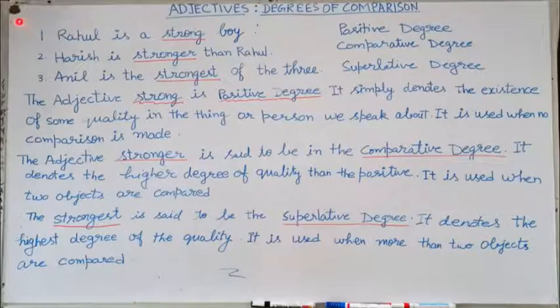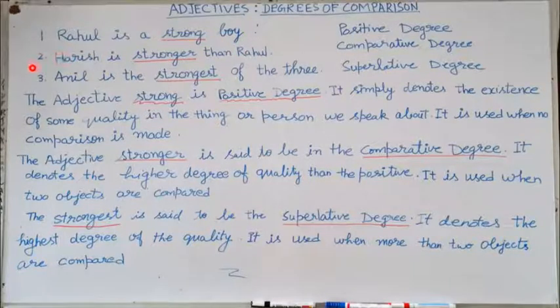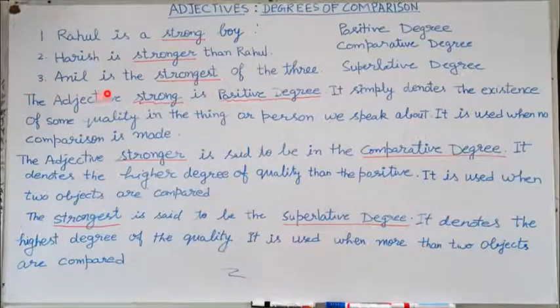Read the following sentences. Number 1: Rahul is a strong boy. Number 2: Harish is stronger than Rahul. Number 3: Anil is the strongest of the three.